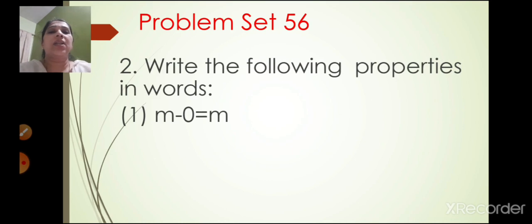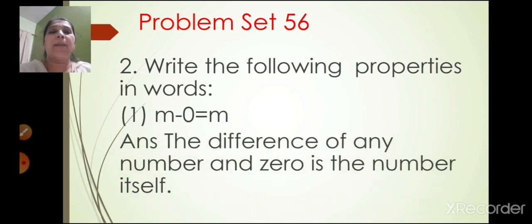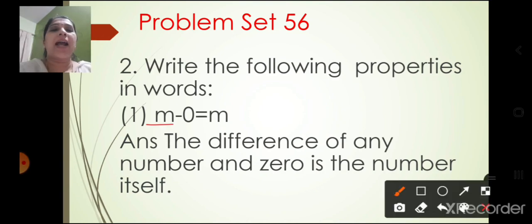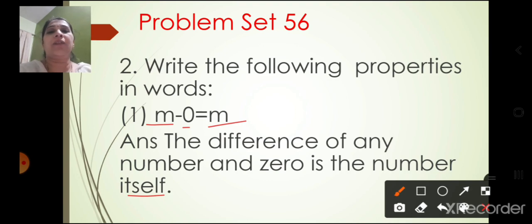The second question is: write the following properties in words. The first one: M minus 0 is equal to M. You will write: the difference of any number and 0 is the number itself. Difference means minus. The number is represented as M. So M minus 0 gives M. For example, 9 minus 0 is equal to 9.